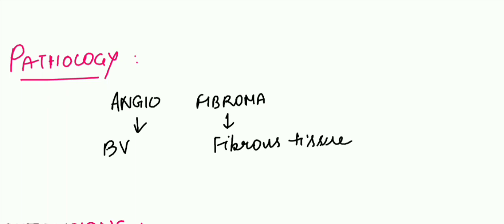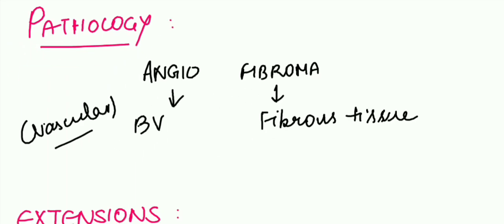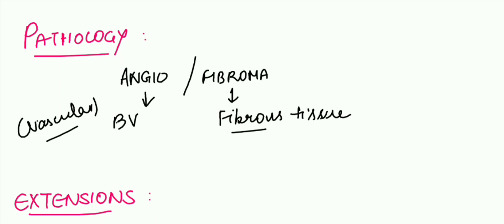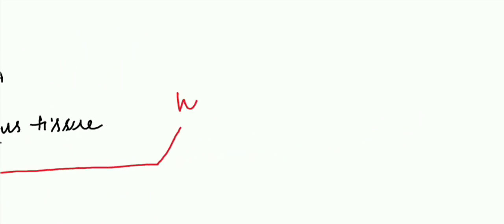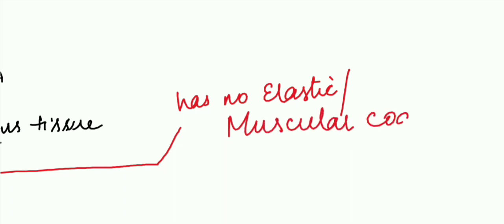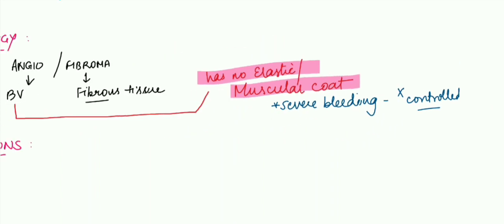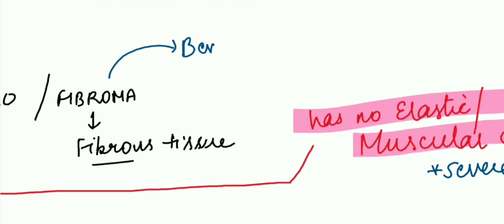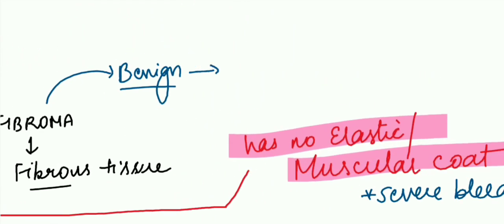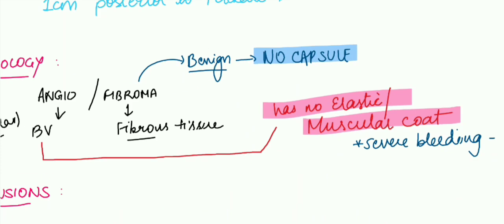Briefly talk about the pathology. It is evident from the name angiofibroma: angio means blood vessels, fibroma means fibrous tissue. Hence this tumor has two components: vascular and fibrous. However, there is a problem: vascular tissue has no elastic or muscular coat in its wall. In case of any severe bleeding, the bleeding cannot be controlled because there is no muscular coat. The second important point is every benign tumor is enclosed by a capsule; however, this is an exception and this particular angiofibroma does not have a capsule.